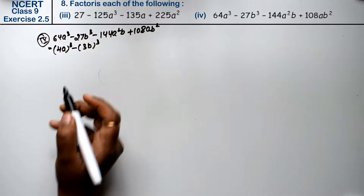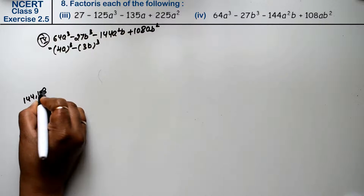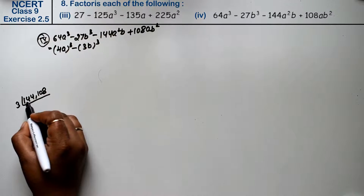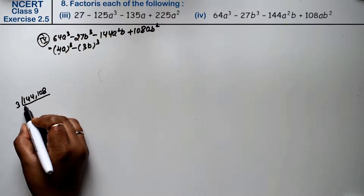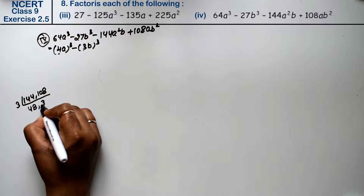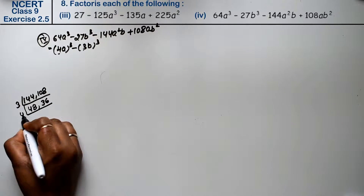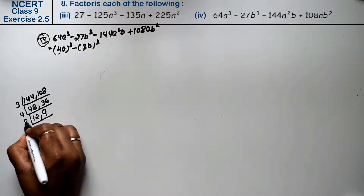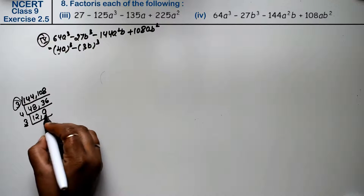What is common in these two middle terms? Let's find factors of 144 and 108. Working through the factors, we find this is the 3ab part of the formula. So minus is common, and we take out 3 into 4a into 3b, leaving (4a minus 3b) inside the bracket.